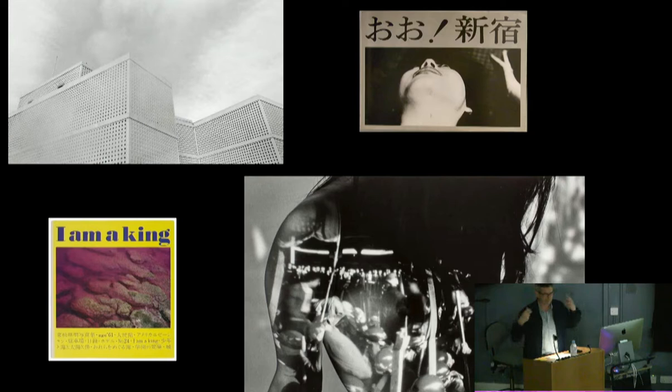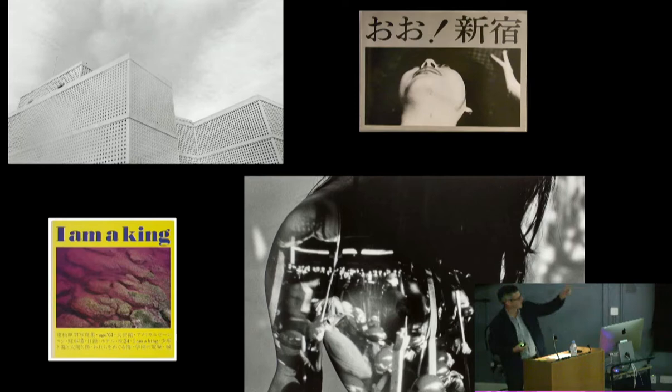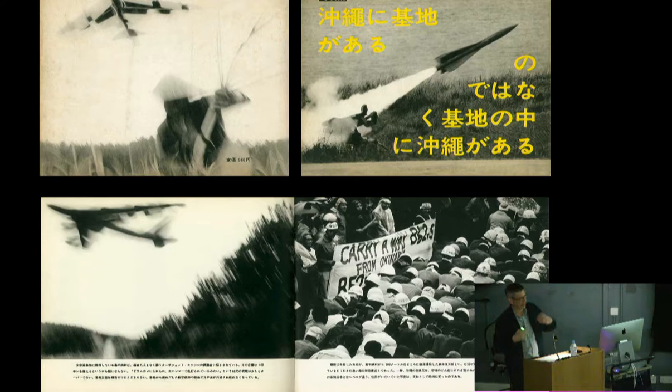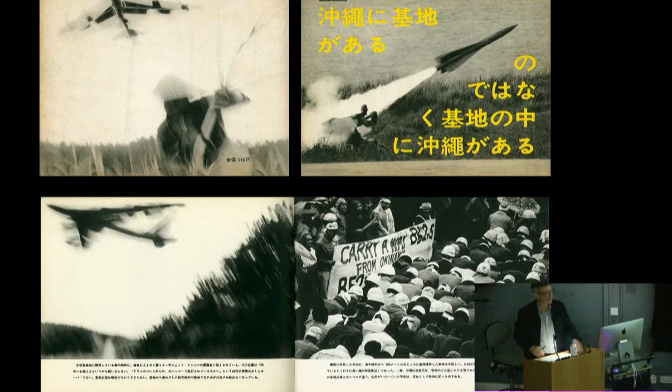Japan was modernizing rapidly during the 1960s, particularly under American influence, and Tomatsu made that his subject. Two of his great photo books: I'm a King from 1972, and his Oh Shinjuku book. To give another sense of how politicized his projects were — this is the book Okinawa, Okinawa, Okinawa from 1969 — about the American occupation of Okinawa, and in particular the fact that the Americans were flying B-52 bombers out from Okinawa over North Vietnam.